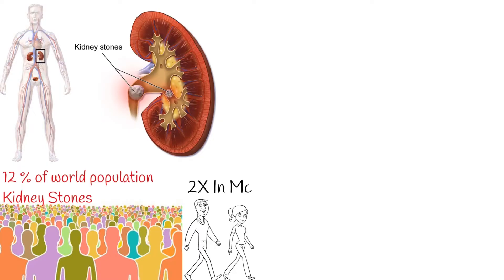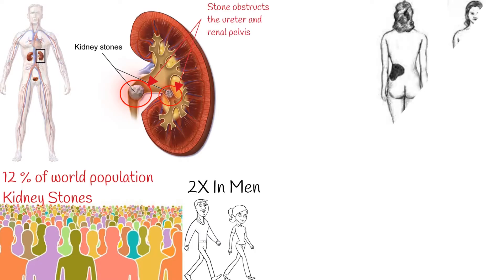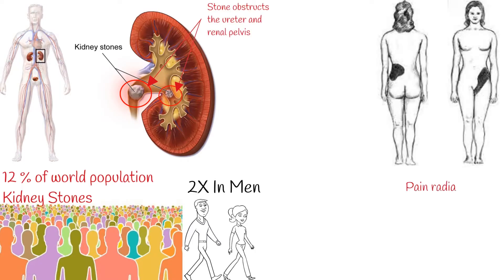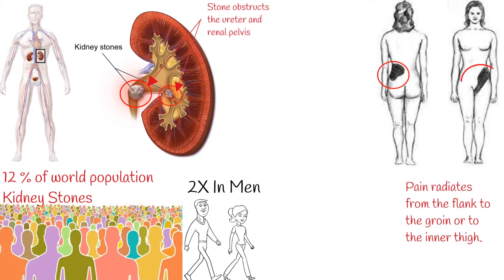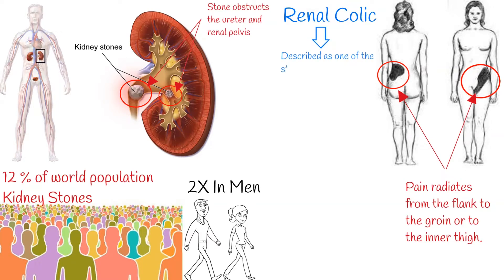Commonly, kidney stones are asymptomatic. But when they become symptomatic, it can be very painful and very severe. Symptoms occur when a stone obstructs the ureter or renal pelvis, causing intermittent pain that radiates from the flank to the groin or inner thigh. This pain, known as renal colic, is often described as one of the strongest pain sensations known.